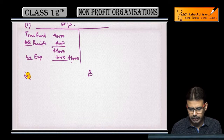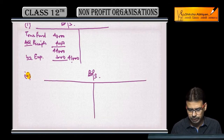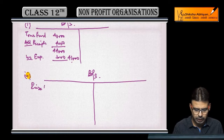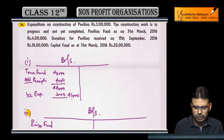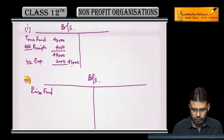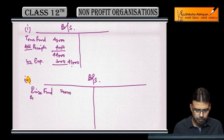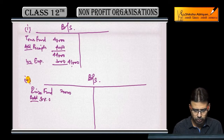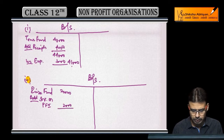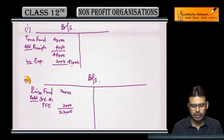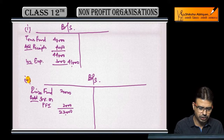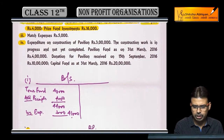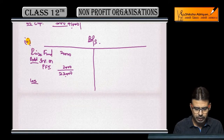Balance sheet banayenge. Balance sheet mein price fund show karengi: price fund 20,000 tha. Interest on price fund investments — humko receipts hua 2,000 — add kar diya. Jitni bhi incomes hain us special fund related, sari add kar di. Jitni expenses hain us special fund related, sari minus. Prices paid — 4,000 — minus kar diya.